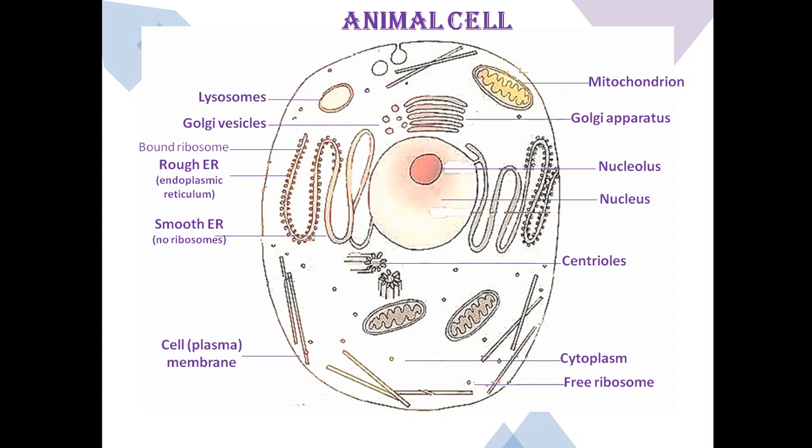Centrioles. These are cylindrical organelles with nine microtubules composed of protein called tubulin. A bound pair of centrioles surrounded by a highly ordered mass of dense material called PCM or pericentriolar material makes up centrosome. These are found near the nucleus, and their main function is to produce cilia during interphase and the aster and spindle during cell division.